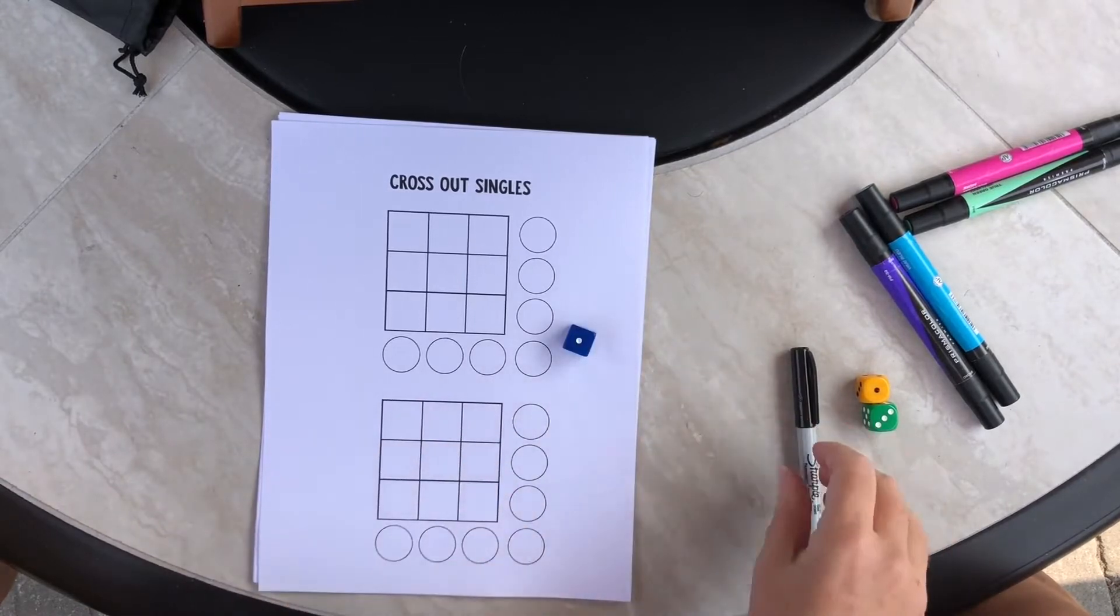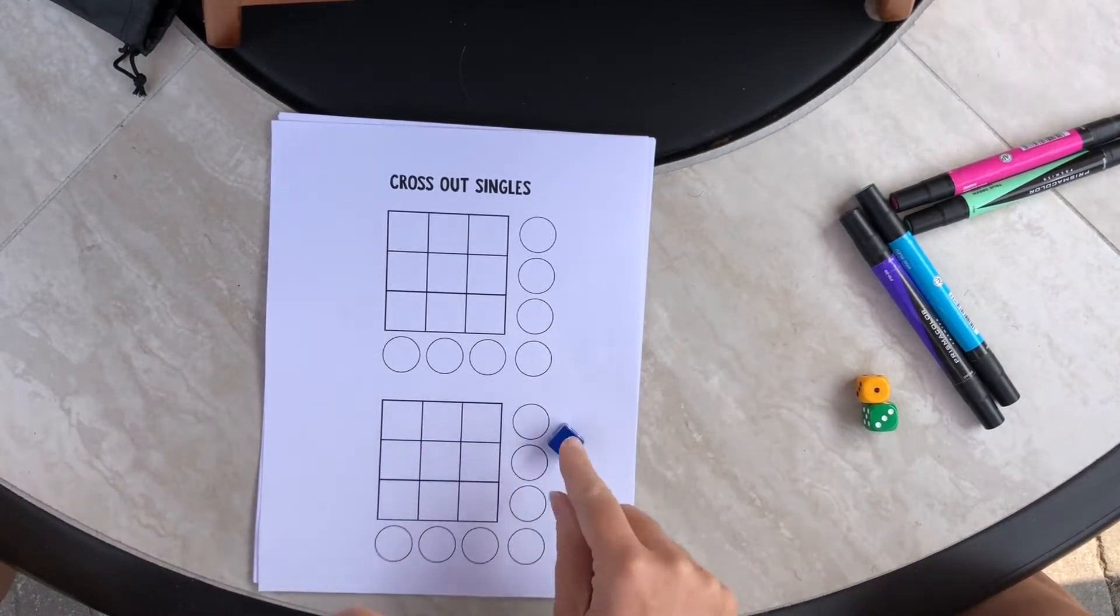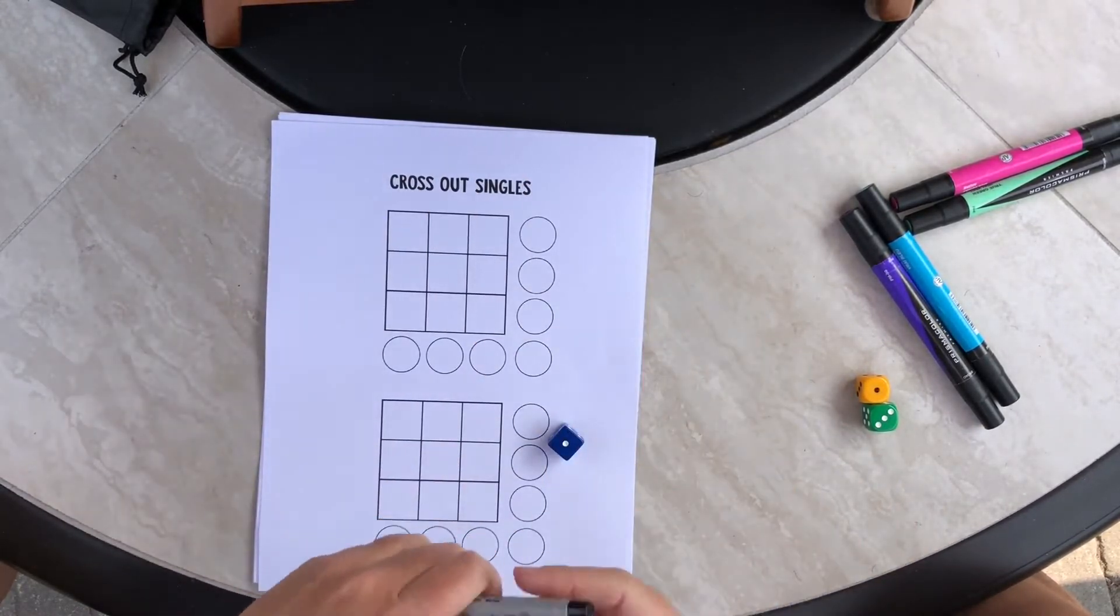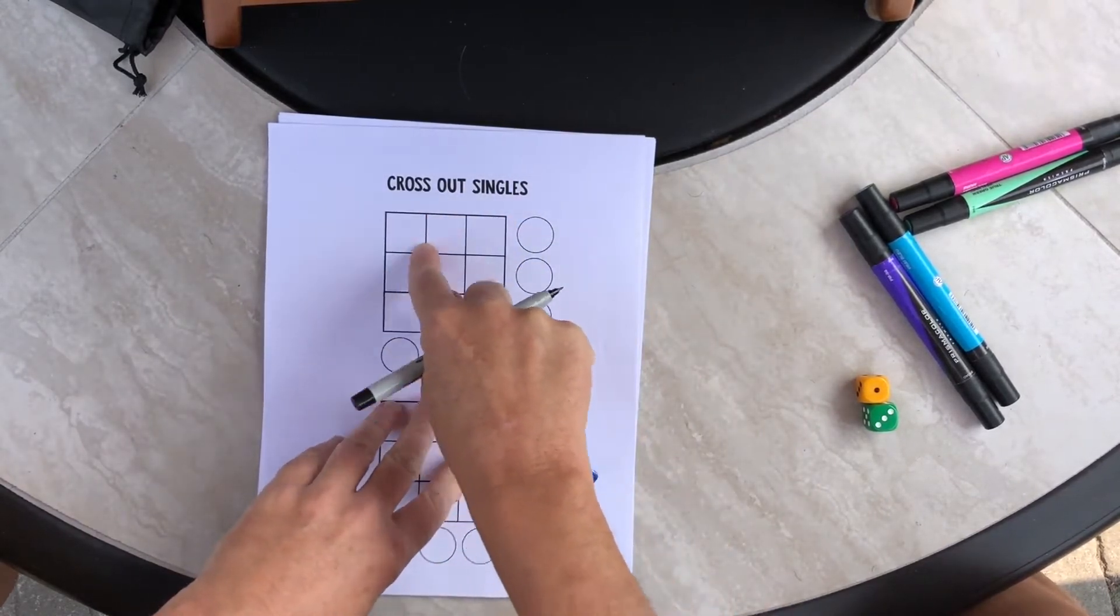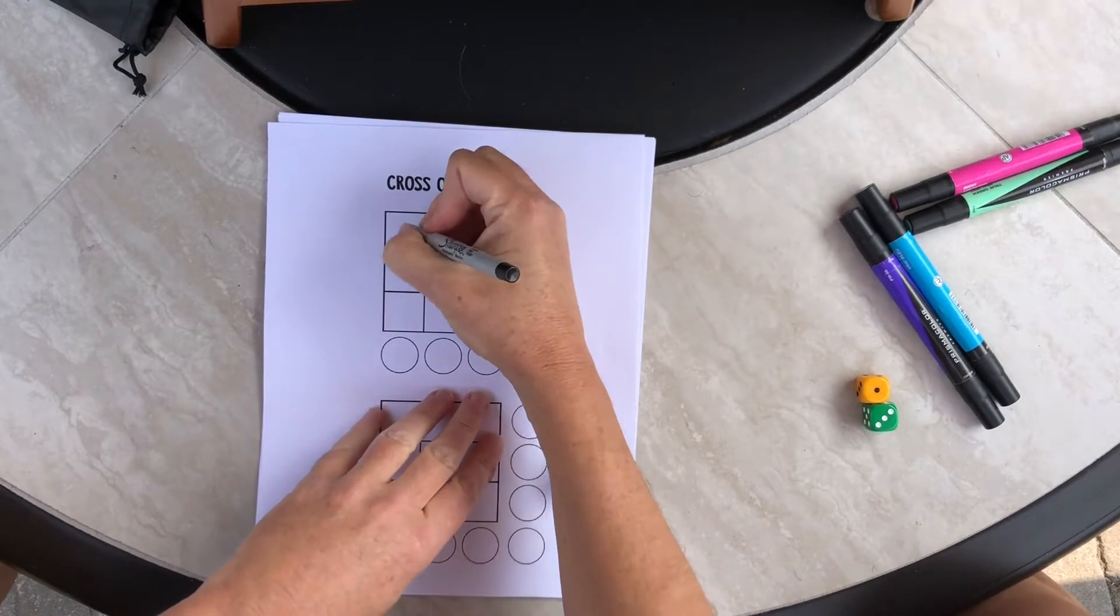So the way you play is you roll the die. You're actually rolling the die for all of the players, so all of the players are going to write a one somewhere in their boxes here, in one of these nine boxes.